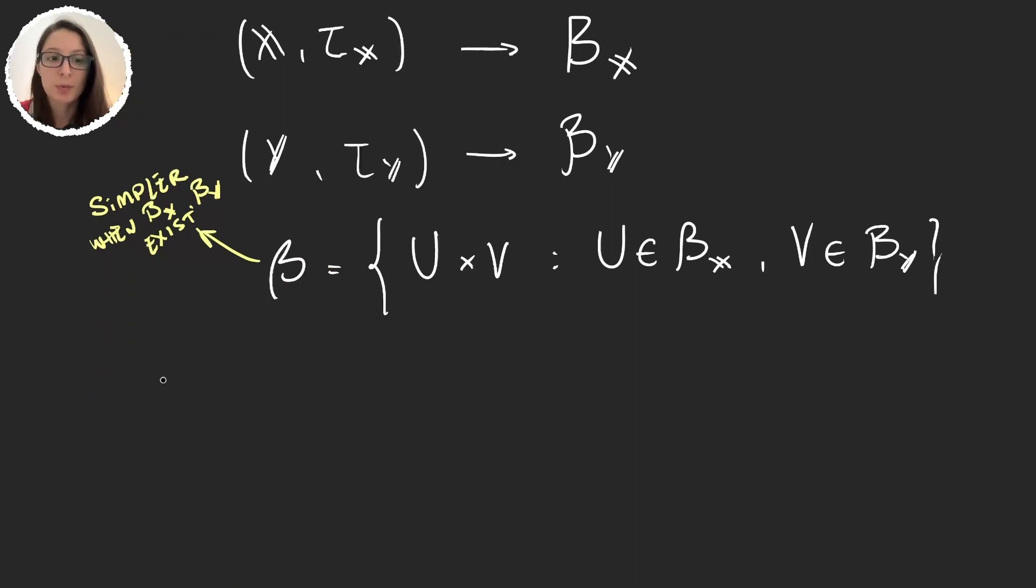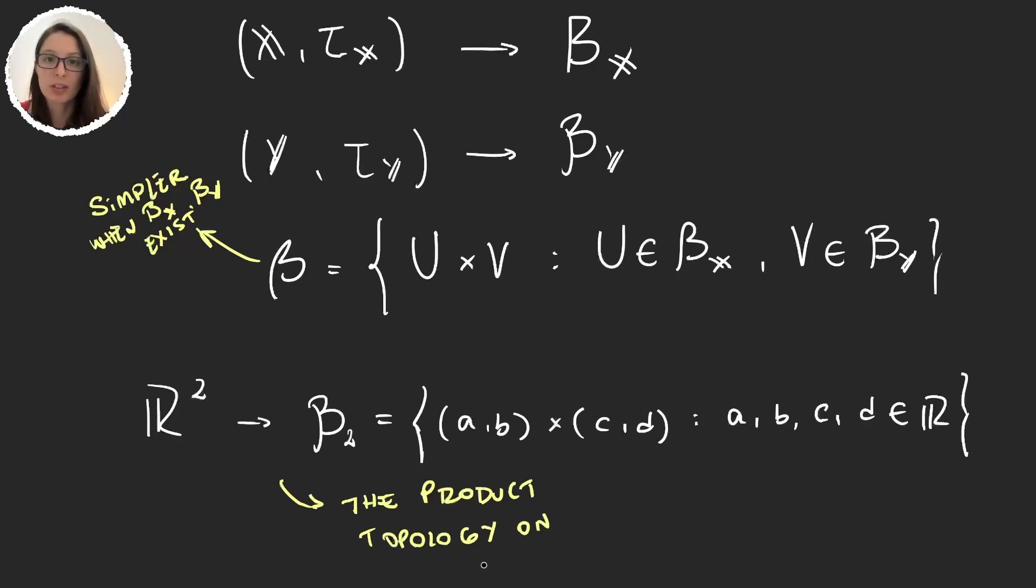So now we do have what I mentioned at the beginning of the video, that the topology in the plane is going to be the one generated by, let's call it p2, the basis of (a,b) times (c,d), where a, b, c and d are all real numbers. It is going to be the product of open intervals, meaning that this is just the basis, and then the topology would be any countable union or finite intersection of these elements. So this topology is going to be called the standard topology in R2, or the product topology in R2.